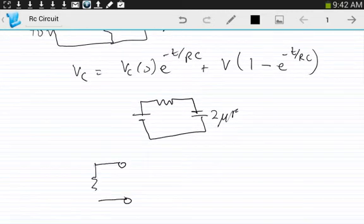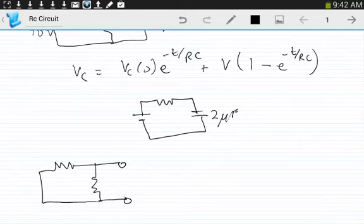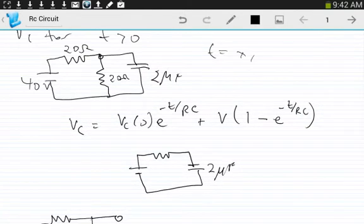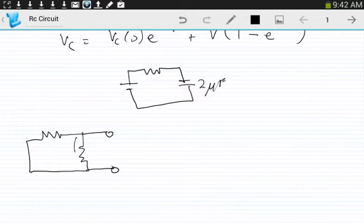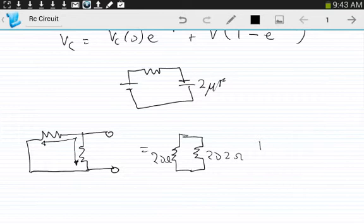We have to get the Thevenin voltage here. For Thevenin voltage, we take the point here and here. Remove this capacitor. So, we're looking in here and we short out any supplies. We have current flow from here to here and from here to here. These two start at one point and end at the same point. Therefore, these resistors are in parallel.